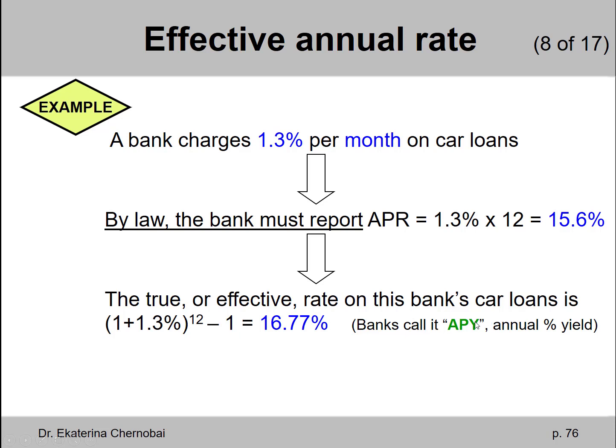By the way, banks call it APY, annual percentage yield. So APR is like the stated quoted nominal rate, APY is the effective rate.